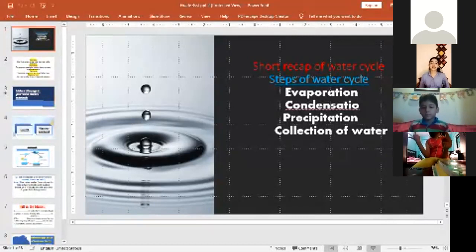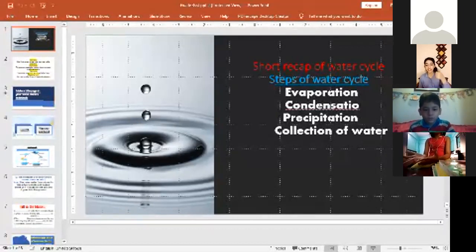In yesterday's class we learned about the steps of water cycle. So there were four steps of water cycle: evaporation, condensation, precipitation, and collection of water.